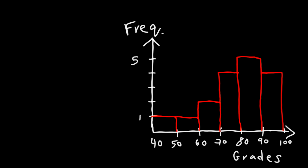What is the mode for this particular data? The mode is basically the range with the highest frequency. Most students received a score between 80 and 89, so that range would be the mode for this histogram.